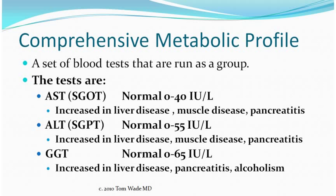The AST, ALT, and GGT are often called liver enzyme tests. They don't measure liver function, but rather give evidence of liver damage; however, they can also be elevated in damage to other parts of the body. They can be increased in liver disease, muscle disease, and pancreatitis, and the GGT can be a sensitive indicator of alcoholism.